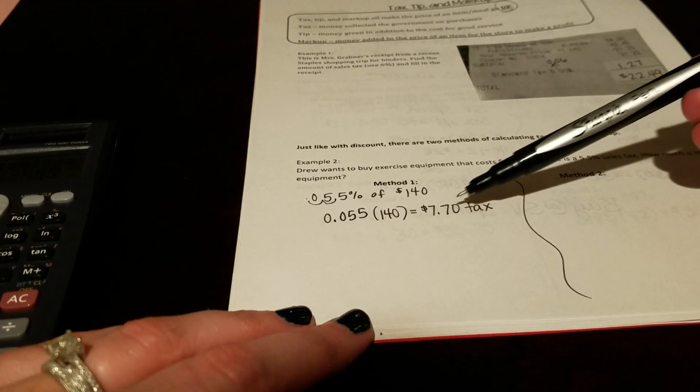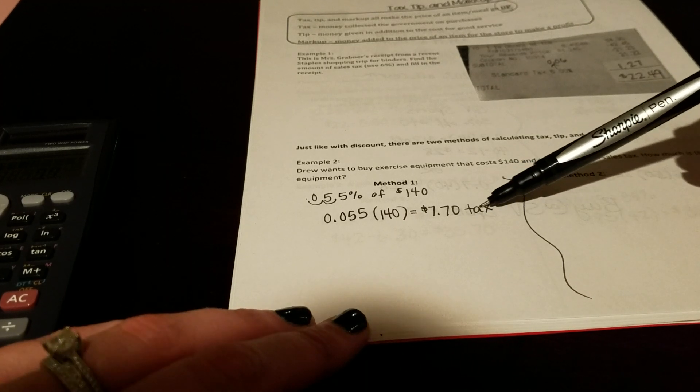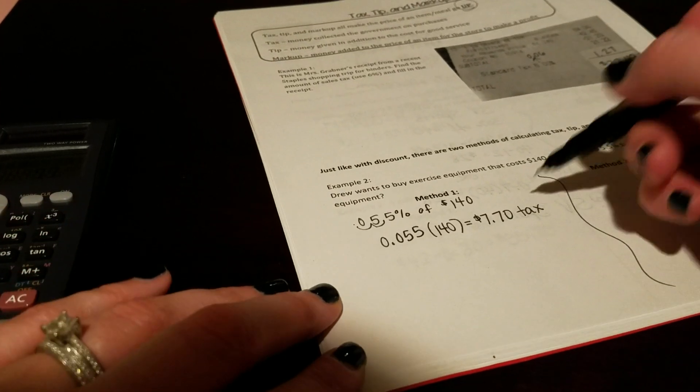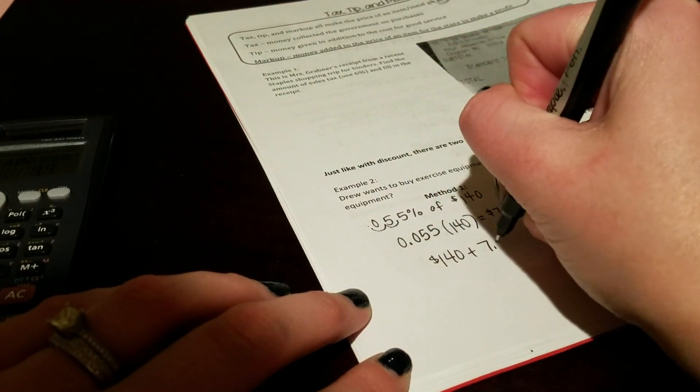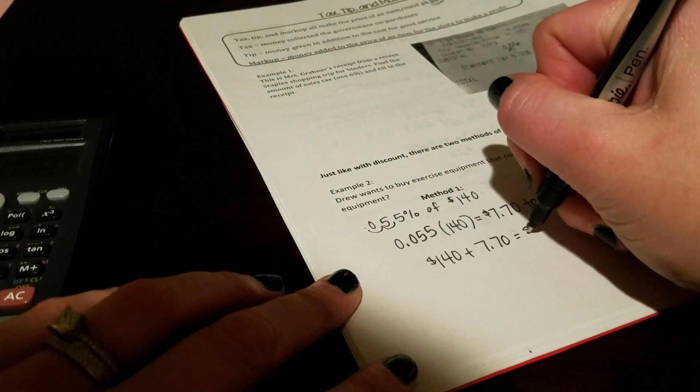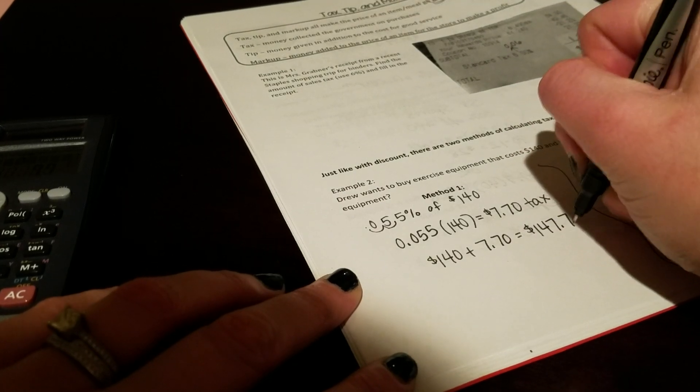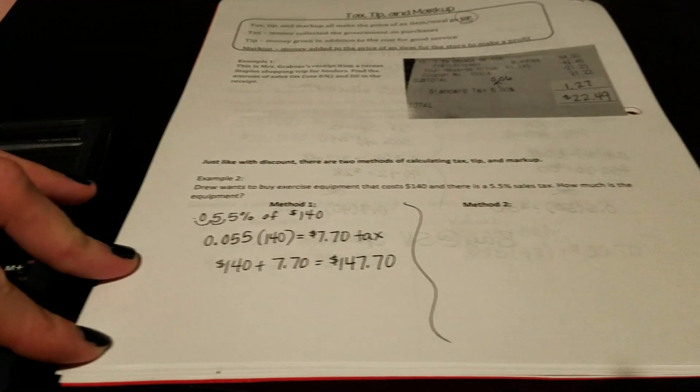Now, little tip and trick for this lesson. Tax starts with a T, which reminds you to go back and add that on. Looks like a plus sign. So you have $140 gym equipment plus $7.70. You're going to spend $147.70.